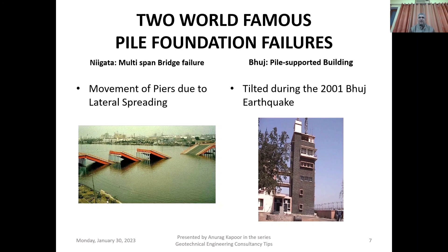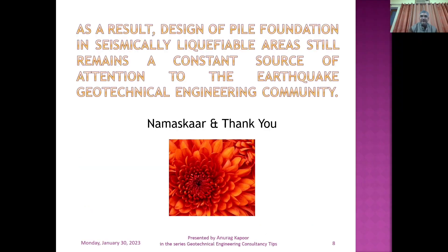I am showing two famous pile foundation failure images. The first is the Niigata multi-span bridge failure, which I have covered in my liquefaction chapter. The second is the Bhuj pile-supported building. In the first case, movement of piers due to lateral spreading caused the bridge spans to fail. In the second case, after the 2001 Bhuj earthquake-induced liquefaction, this building tilted.